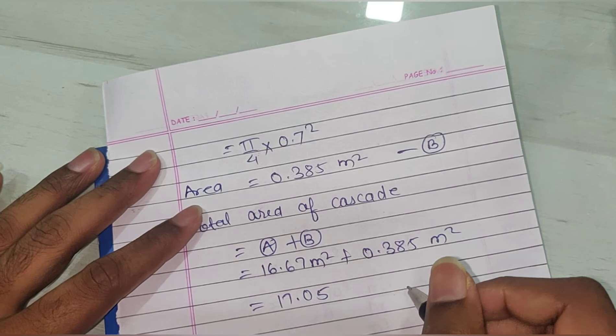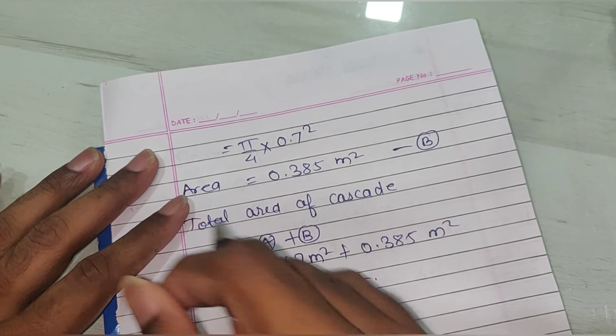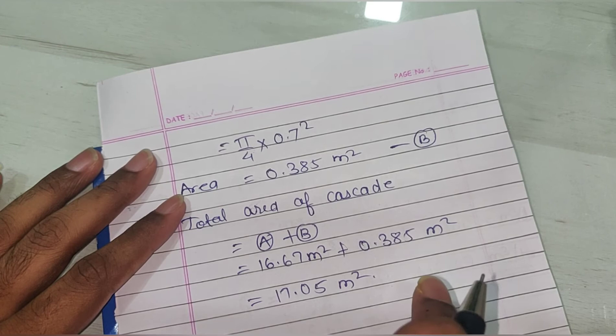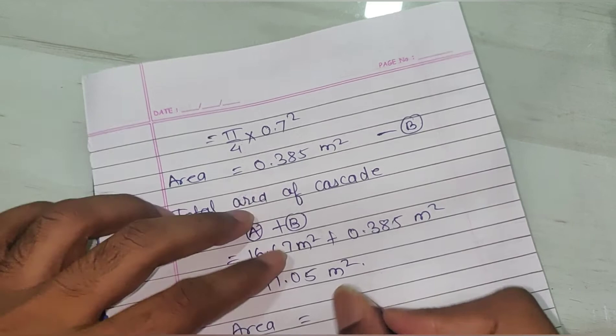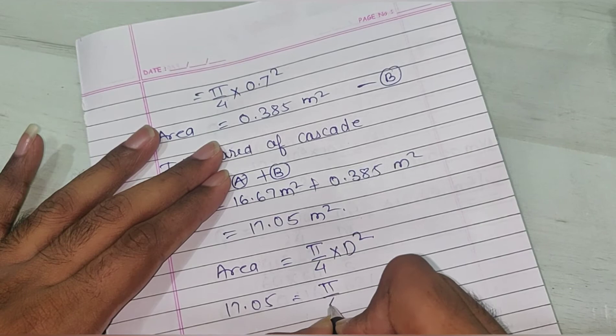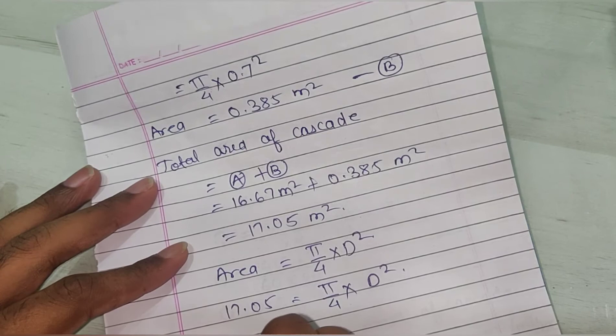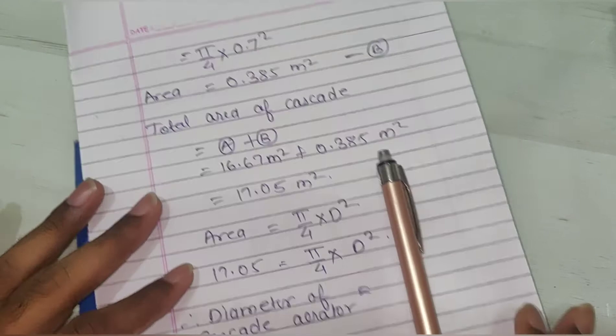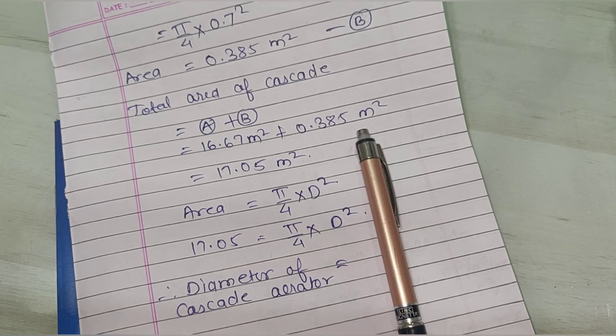Now we have to find the diameter of the total cascade area, which includes both the number of steps and the diameter of the central shaft and pipe. Using area equals pi by 4 into D squared: 17.05 equals pi by 4 into D squared. After calculating, the diameter of the cascade aerator comes as 4.66 meter.